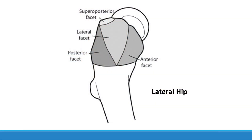The gluteus minimus inserts at the anterior facet of the greater trochanter. The gluteus medius has two insertions to the greater trochanter at slightly different locations — the anterior band of the gluteus medius inserts to the lateral facet, and the posterior band inserts to the superior posterior aspect of the greater trochanter.